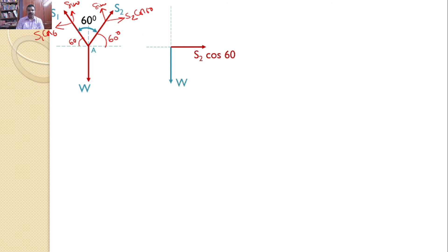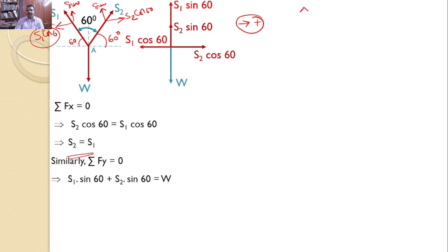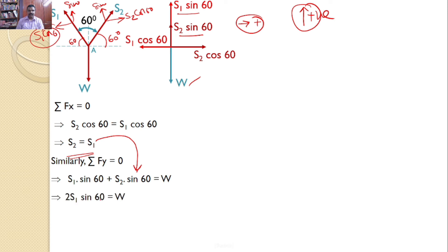S2 cos 60 is the horizontal component and S2 sin 60 is the vertical component. Applying the equilibrium equation: along the x-axis, S2 cos 60 = S1 cos 60, so S1 = S2. Along the y-axis: S1 sin 60 + S2 sin 60 = W. Substituting S1 = S2 gives 2S1 sin 60 = W, and upon simplification, S1 = 0.577W, which also equals S2.